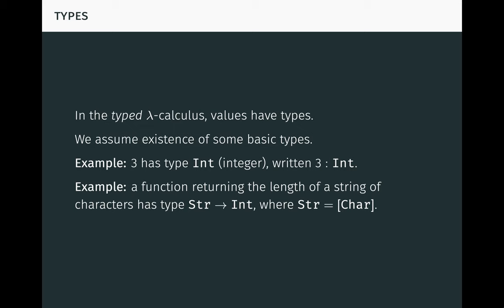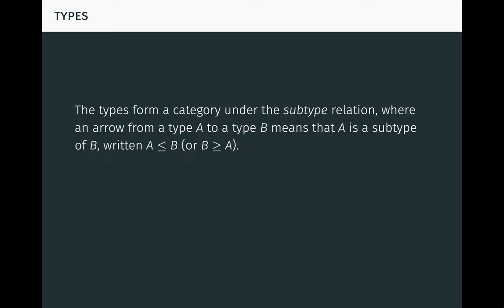We will need this perspective later on. Now we make a connection to category theory. The types in the lambda calculus form a category under the subtype relation, where an arrow from a type A to a type B means that A is a subtype of B, written A ≤ B or B ≥ A. Another way to say this is that there's an arrow from the type A to the type B in this category, if and only if A is a subtype of B. As an example, int is a subtype of num, the type of all numbers, so int ≤ num in this category.